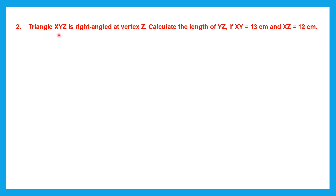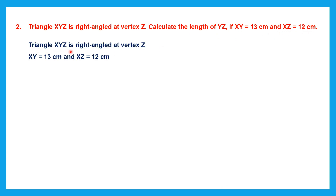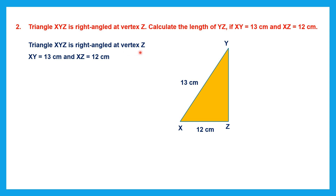Question 2: Triangle XYZ is right angled at vertex Z — be very careful about identifying this. Calculate the length of YZ if XY is 13 centimeters and XZ is 12 centimeters. Drawing the triangle: it is right angled at vertex Z, so the right angle — 90 degrees — is at Z. The side opposite the 90 degrees, XY which is 13 centimeters, is the hypotenuse. We need to calculate the length of YZ.